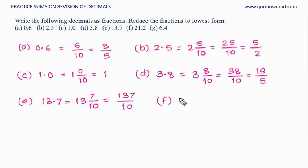Next is F, 21.2. 21 is whole and 2 at 10th place, so 2 tenths. Converting it into improper, 10 into 21 is 210 plus 2 is 212. 212 upon 10. We see both are even numbers, so 2 is a common factor. If we remove the common factor 2 by dividing both numerator and denominator by 2, that gives us 106 upon 5.